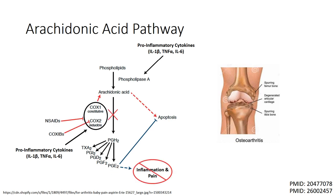One potential option to limit the inflammation and pain associated with osteoarthritis is through the use of non-steroidal anti-inflammatory drugs such as aspirin, ibuprofen, and naproxen. These drugs function by inhibiting the cyclooxygenase enzyme, which would then prevent the conversion of arachidonic acid into downstream pro-inflammatory prostaglandins. One potential consequence of NSAID use is that arachidonic acid can build up, resulting in programmed cell death, also known as apoptosis.